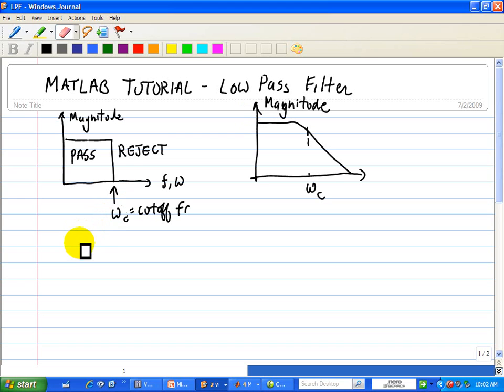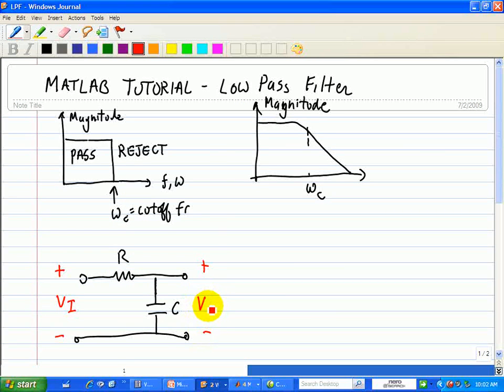Now, a practical implementation of a low-pass filter is governed by this simple RC circuit. Here's our capacitor, here's our resistor. Here's our input voltage VI, and our output voltage VO.